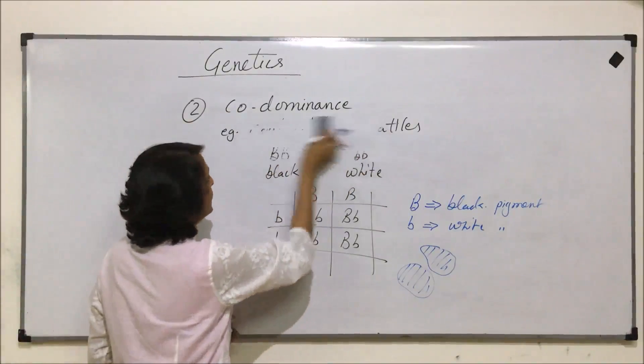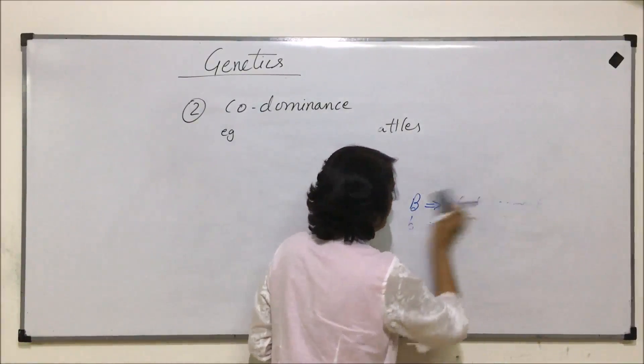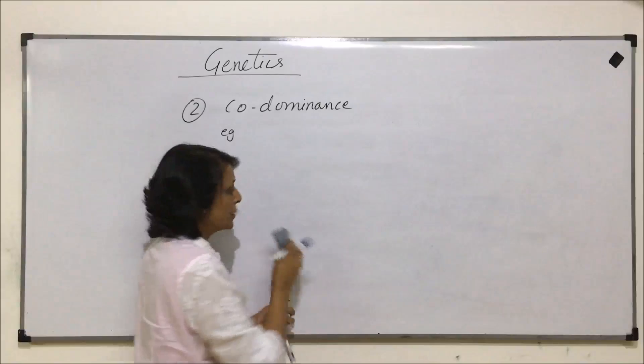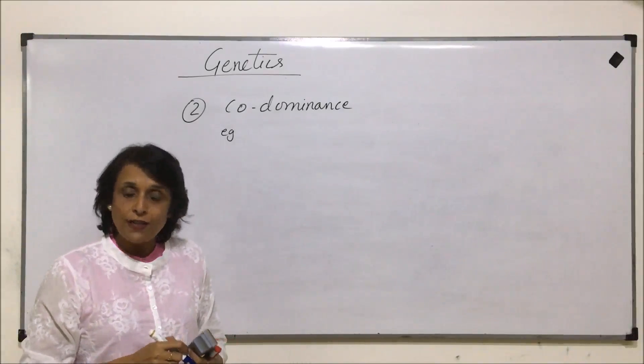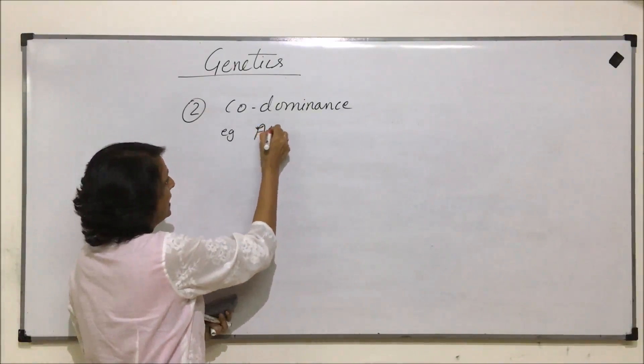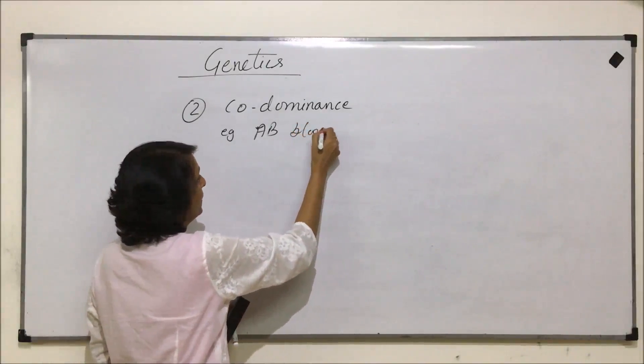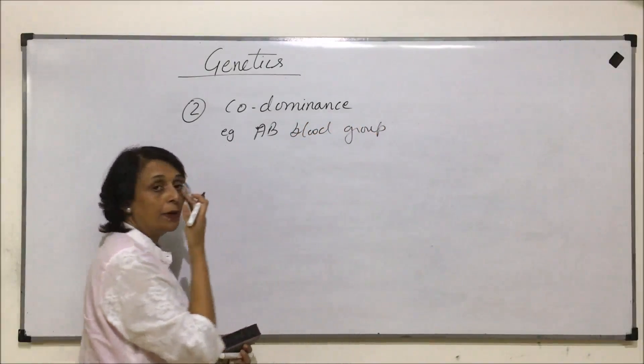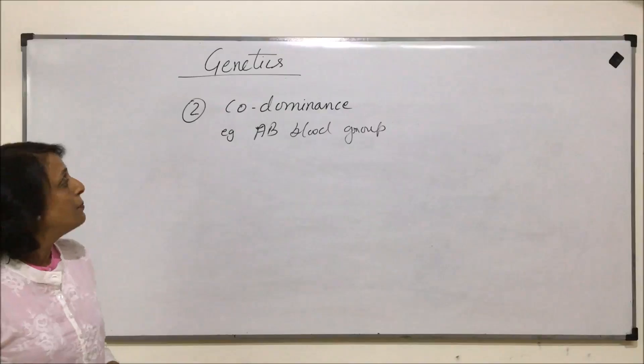We will talk of blood groups because it is also a different type of inheritance, but we will take one specific type. AB blood group in human beings is an example of co-dominance.